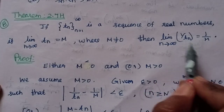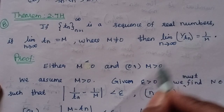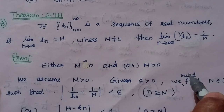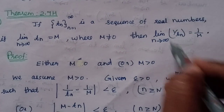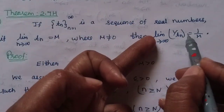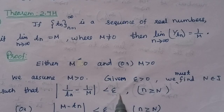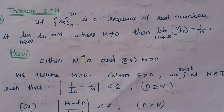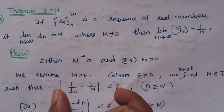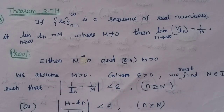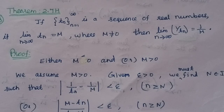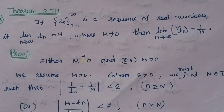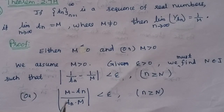By the definition of this limit: given epsilon greater than 0, we must find N belonging to the natural numbers such that the modulus of 1 by tn minus 1 by m is less than epsilon for all n greater than or equal to N.